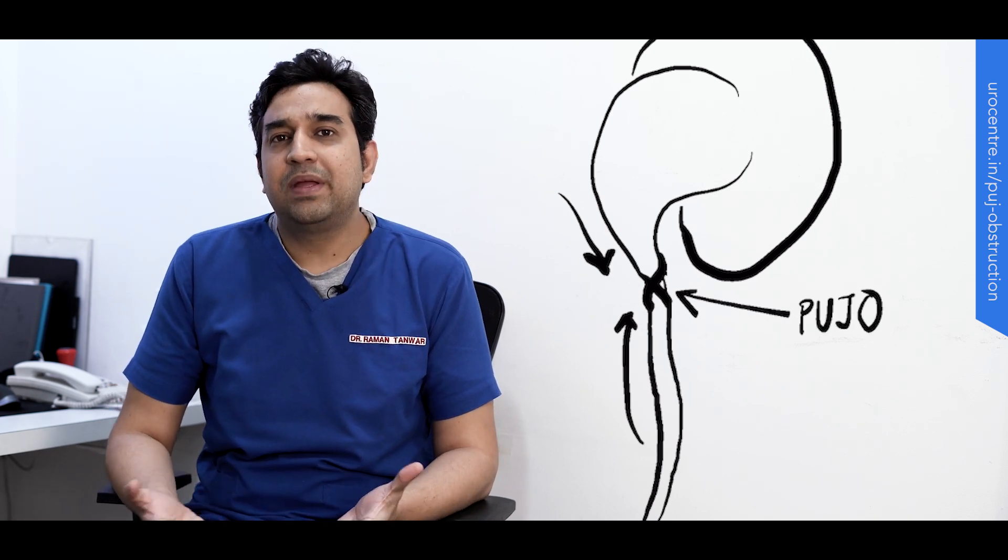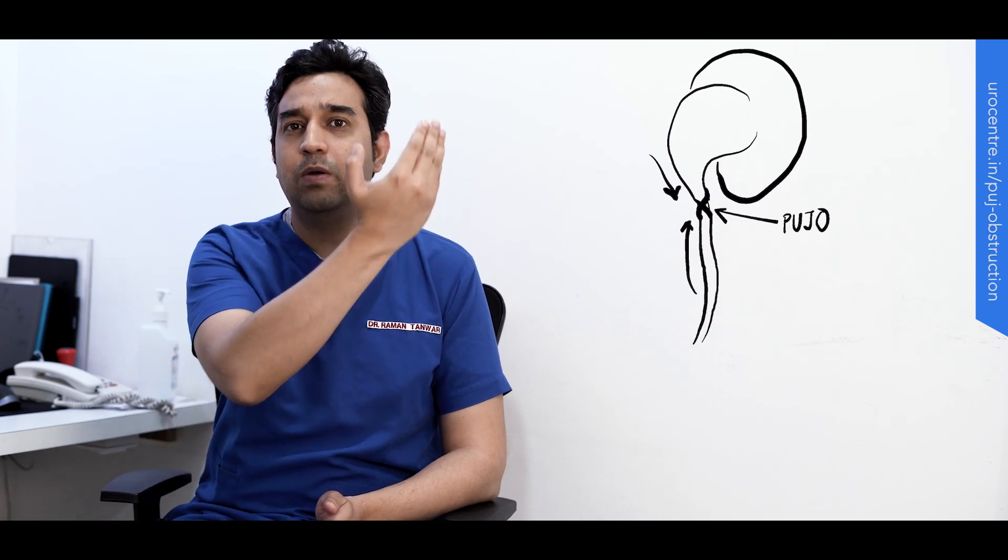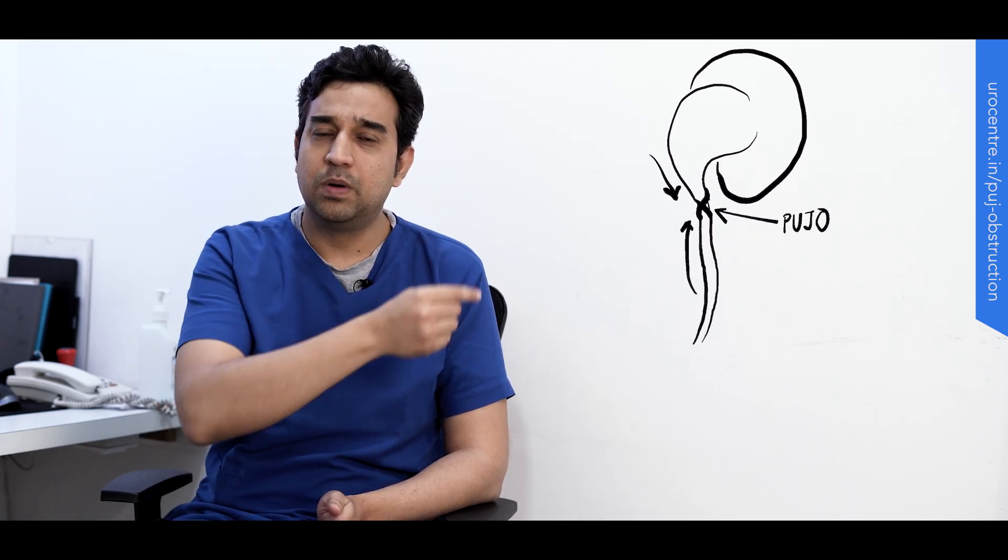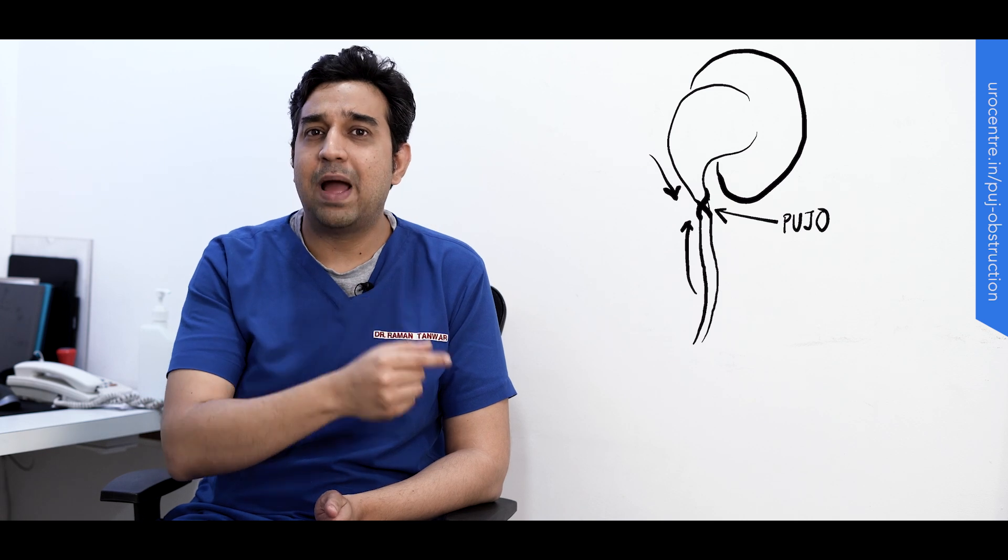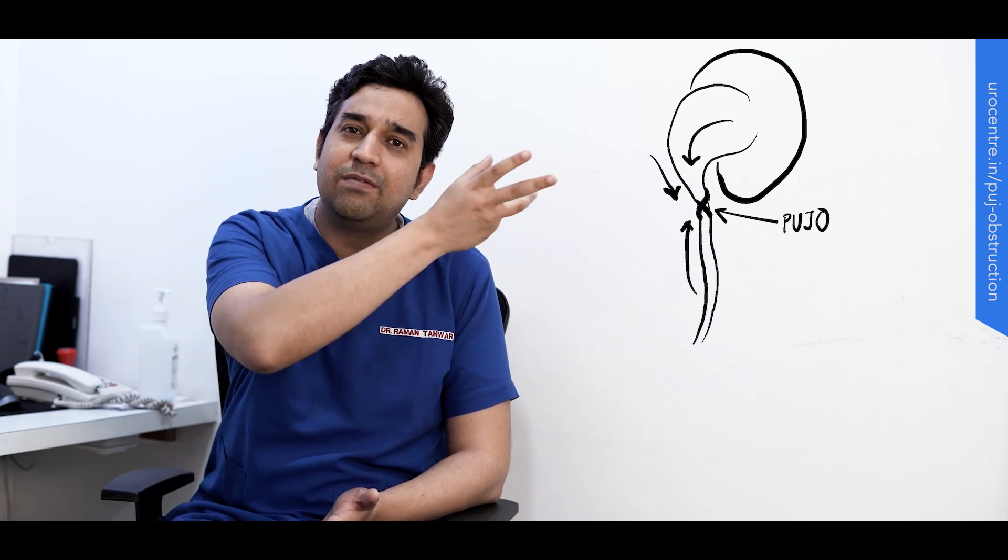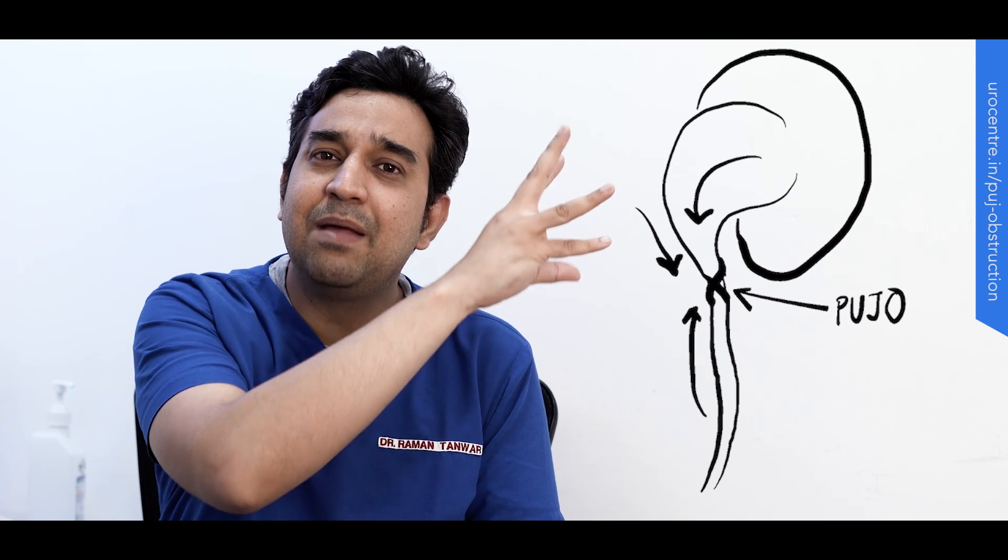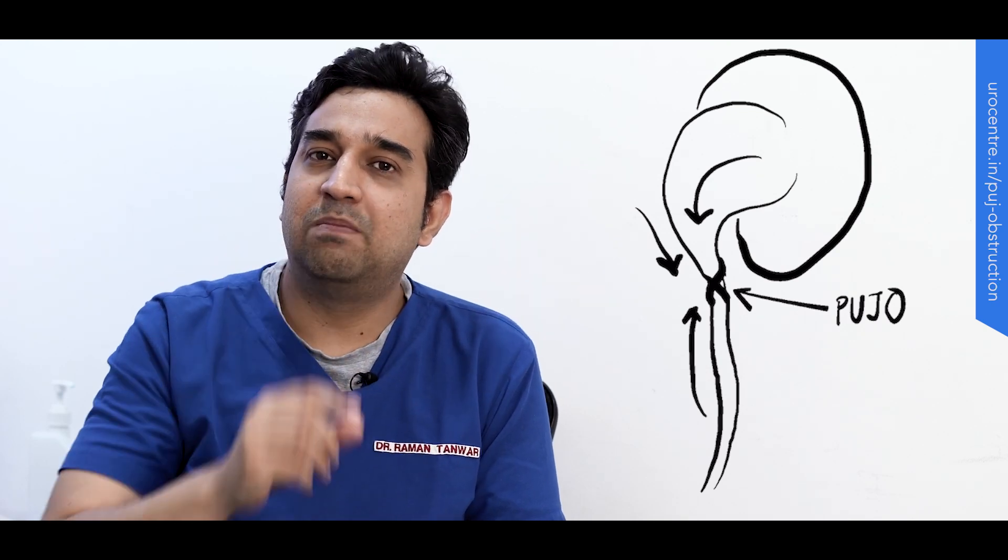When the baby is forming inside the womb, the ureter starts to develop from down below. The development of this tube, this pipe which we call the urine pipe or the ureter, happens from the bladder side upwards. Similarly, the funnel of the kidney starts to form from above to down, and they meet in between and form this junction.